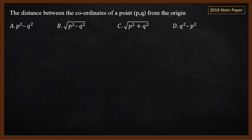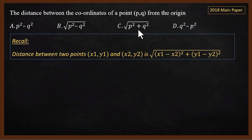Next question — this was asked in the SSLC 2018 main exam paper. The question asks for the distance between a point P(q) and the origin. The answer is directly the square root of p² + q². You can derive this from the distance formula: the distance between two points (x1, y1) and (x2, y2) is given by √[(x1−x2)² + (y1−y2)²].